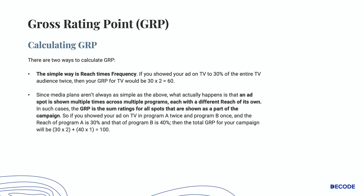Now let's quickly look at how GRP is calculated. There are two ways to calculate GRP. The simple way is reach times frequency. So if you showed your ad on TV to 30% of the entire TV audience twice, then your GRP for TV would be 30 multiplied by 2, which is equal to 60.